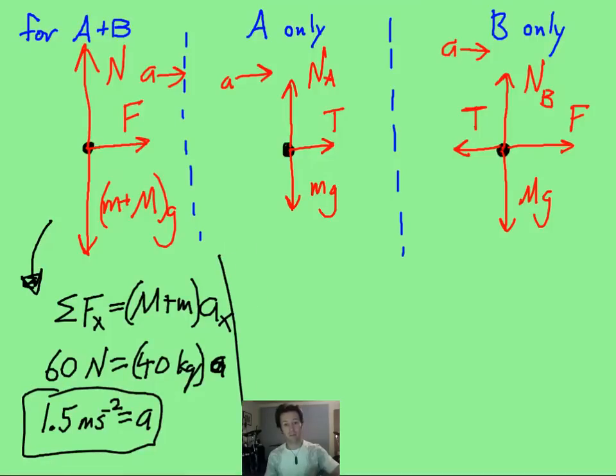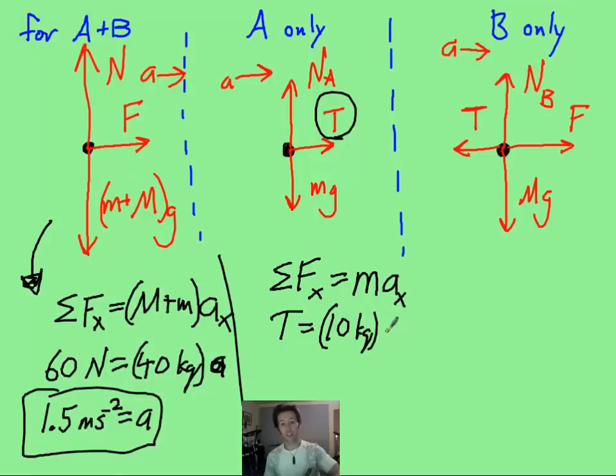We can then use that as we come up here to find the tension because now, for just the small block only. Again, Newton's second law in one direction - we only have one mass that we're concerned with, and we know that tension of the rope is the only thing on it. It's got a mass of 10 kg. We now know the acceleration is 1.5, and we get our tension of 15 newtons.